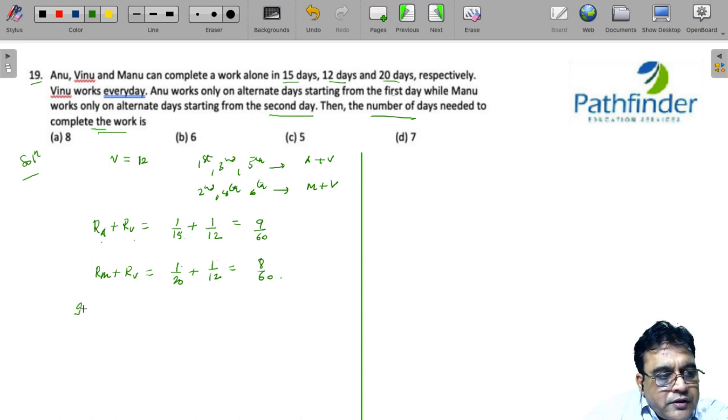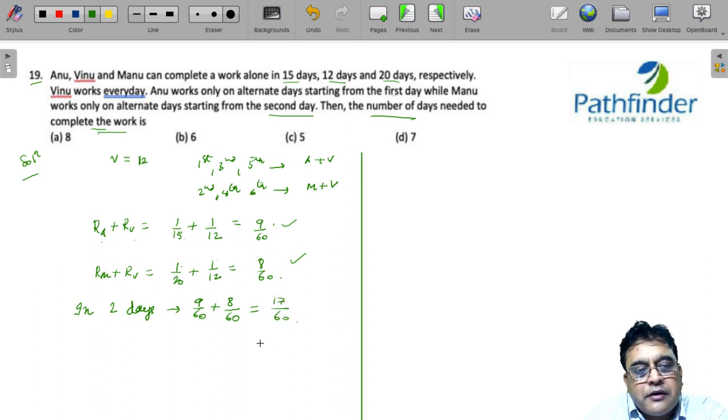So which means in 2 days, the first 2 days, the amount of work done will be 9/60 plus 8/60, that is equal to 17/60. So if we have 3 sets of 2 days each, the amount of work done in 6 days will be 3 into 17/60, which is 51/60.